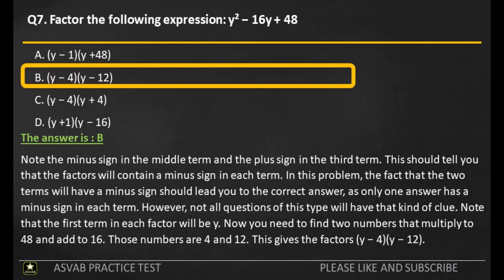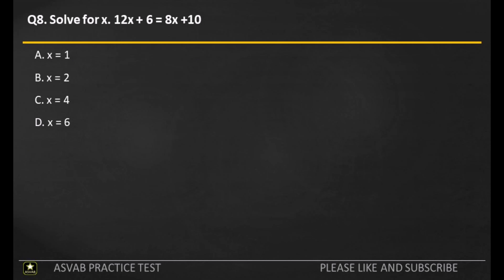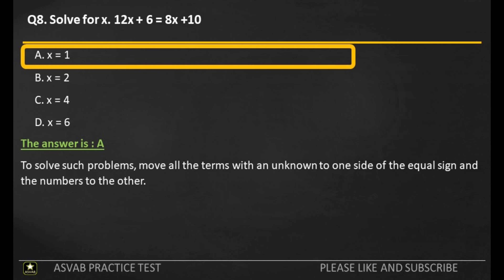Q8. A: X equals 1. B: X equals 2. C: X equals 4. D: X equals 6. The answer is A. To solve such problems, move all the terms with an unknown to one side of the equal sign and the numbers to the other.